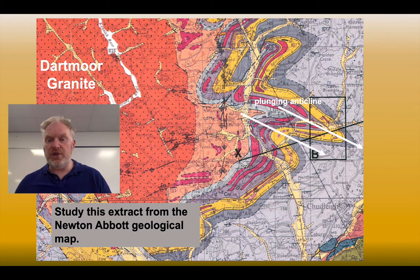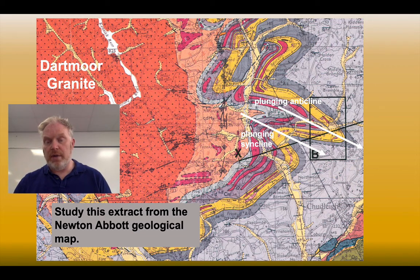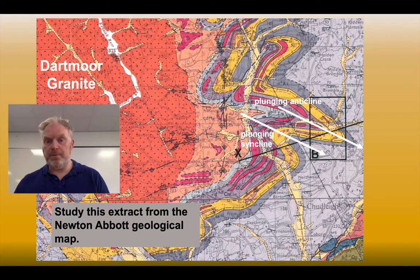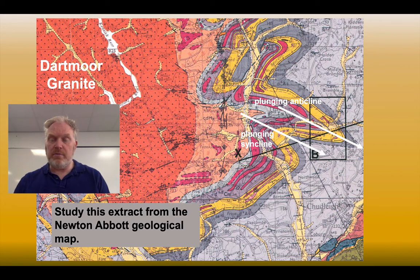Just to the south of that, we see another V-shape with the V pointing the other way. This is a syncline — here we've got the younger bed, the grey one, in the middle of the fold with the yellow bed either side. That is a plunging syncline. Notice how the plunge of a syncline goes in the direction that the beds open up. So both of these folds are plunging to the south-east, probably because of the intrusion of the granite. As the granite was pushed up into these rocks, they were folded by the plate collision that led to the magma being formed. As the granite forced its way up through the crust, it domed the rock around it, so these folds are plunging away from the granite.